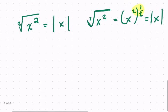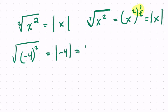For example, if you have negative four squared, and then you're taking the square root of that, this tells me that it has to be the absolute value of negative four, which is just four.